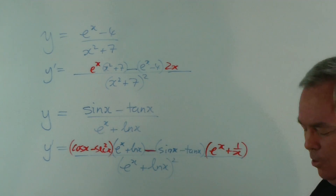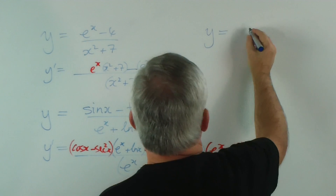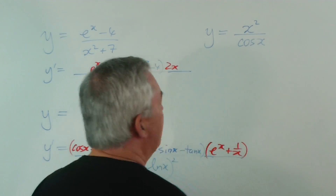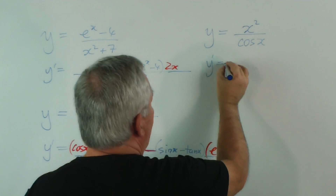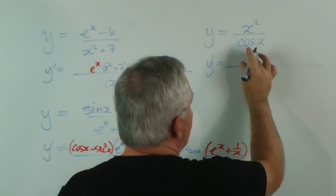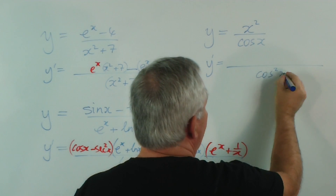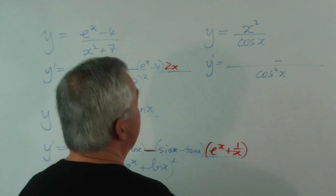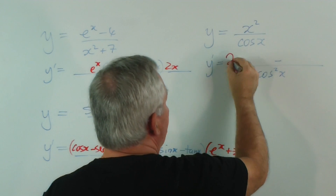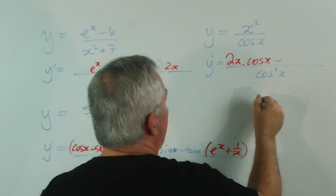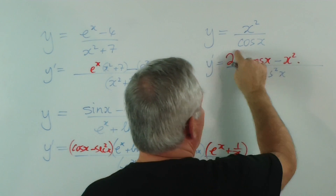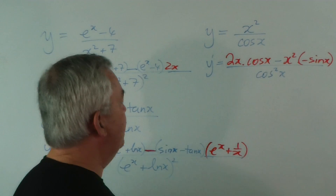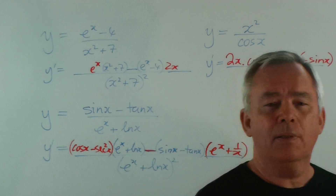One more example — let's make it a very simple one, an exam-standard question. To find the derivative, we draw the vinculum, square the denominator, put the minus sign in. Working from left to right: derivative of the top is 2x, times the bottom. Then we leave the top alone and multiply by the derivative of the bottom, which is minus sin x. And that's it — that's the quotient rule. Anything else beyond that is tidying up the algebra.